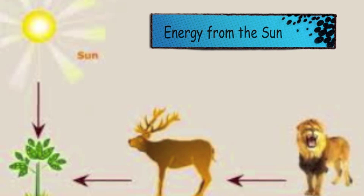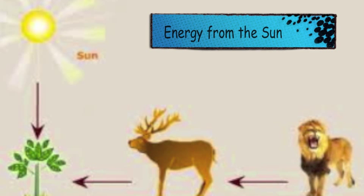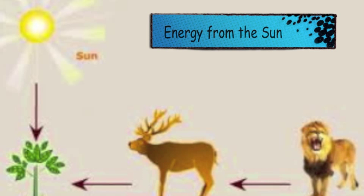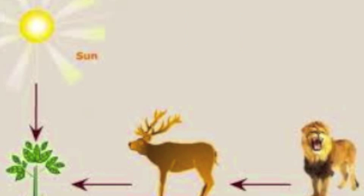Food chains show how energy is passed from one organism to another in an ecosystem. All energy ultimately comes from the sun. Here we see that the sun provides energy to the plant, which provides energy to the deer, which provides energy to the lion.